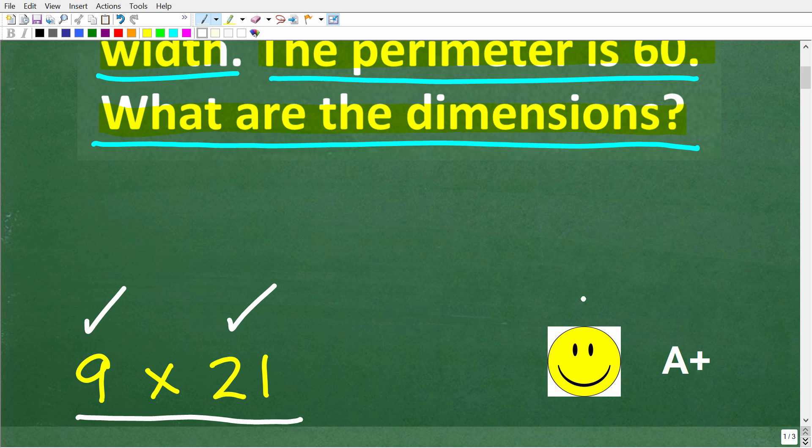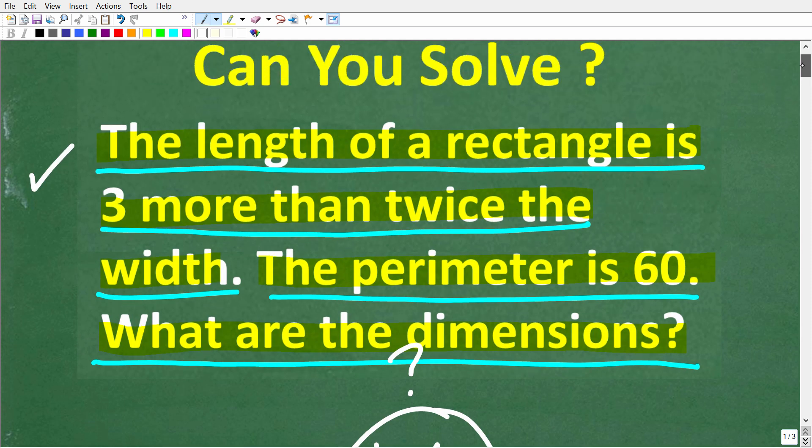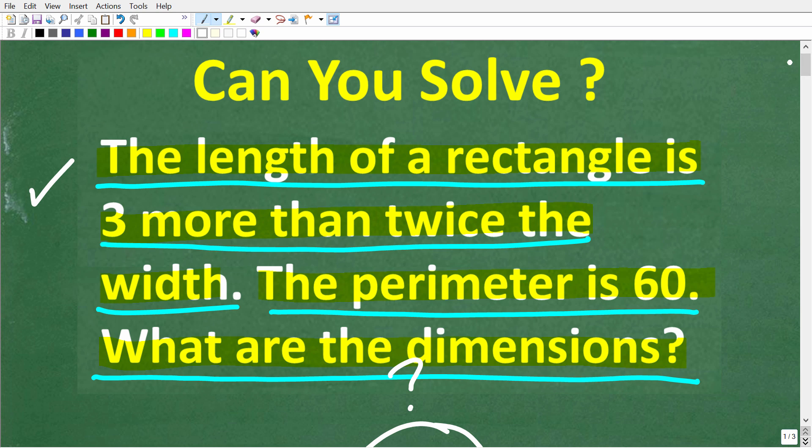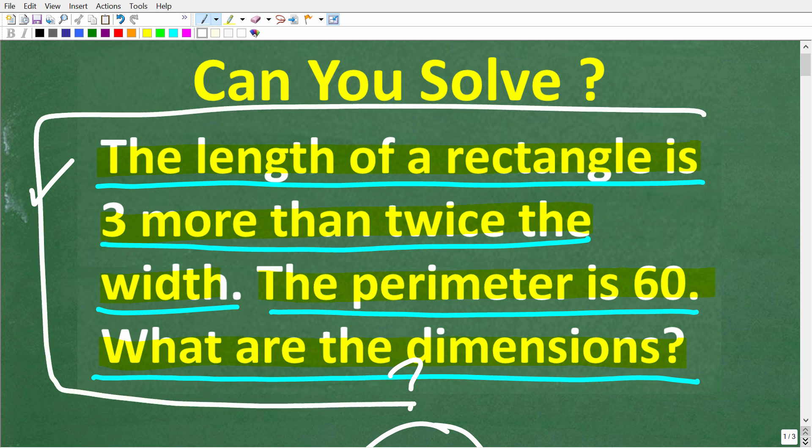Now if you got this right, well you definitely get a happy face and an A+. If you missed it, you're like, I thought I was on the right track. What went wrong? Well, you probably made a simple error, or you probably maybe even set up this problem incorrectly. But either way, we could fix whatever you don't understand. Let's go and get into this right now.